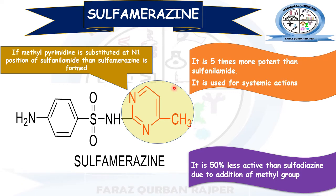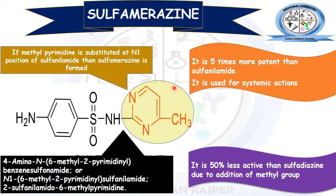It is 50% less active in comparison to Sulfadiazine, because Sulfadiazine is 10 times more potent than sulfanilamide while Sulfamirazine is only 5 times more potent than sulfanilamide. Overall, it is 50% less active than Sulfadiazine because of the additional methyl group. The IUPAC name for Sulfamirazine is 4-amino-6-methyl-2-pyrimidinyl benzene sulfonamide, where the N1 position is substituted with 6-methyl-2-pyrimidinyl. It can also be named 2-sulfanilamido-6-methylpyrimidine, meaning the sulfonamido group is present at the second position of methylpyrimidine.